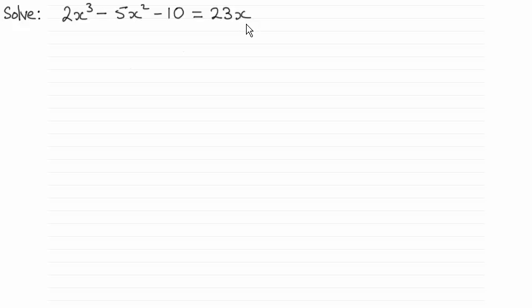So the method of solving is to make sure that it equals zero and it's a good idea to make sure that the first term is positive and you write it in descending powers of x. So if I subtract 23x from both sides, rearrange it and I get this equation here.